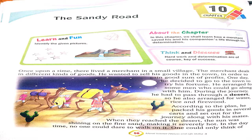Once upon a time there lived a merchant in a small village. The merchant dealt in different kinds of goods — woh apna kaam karta tha, deal karta tha — aur woh apne samaan ko bechne ke liye sheher mein jaaya kerta tha, jiske liye use bahut profit bhi milta tha. Ek din usne decide kiya ki woh town jaayega to try his luck — apni kismat ko aazmaane jaayega. To usne kuch log arrange kiye jo uske saath ja sakein.